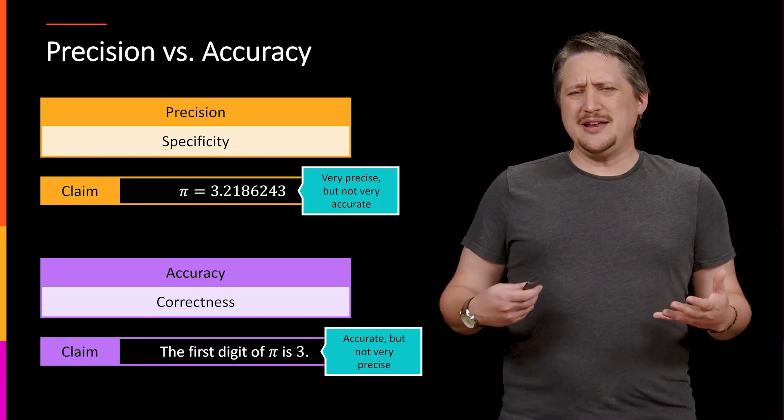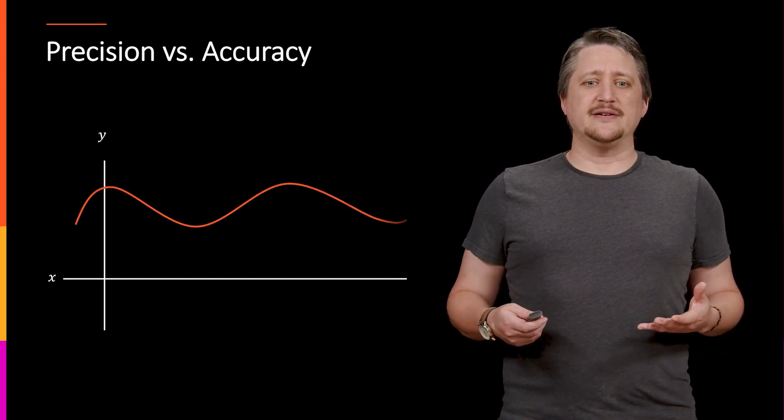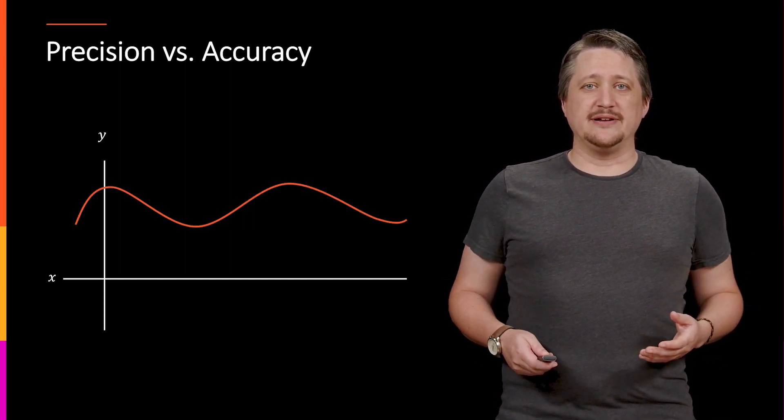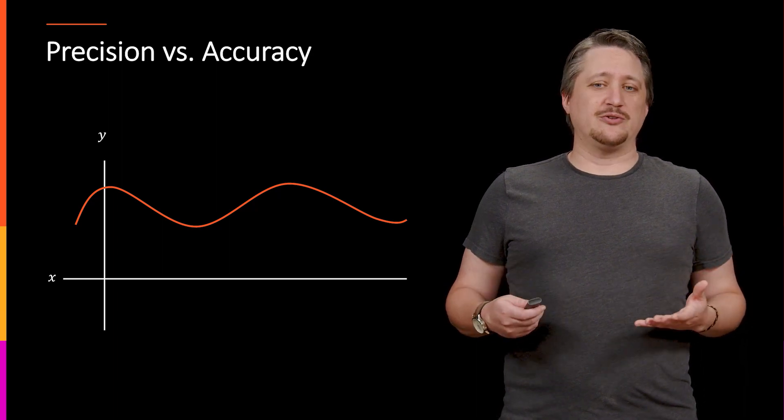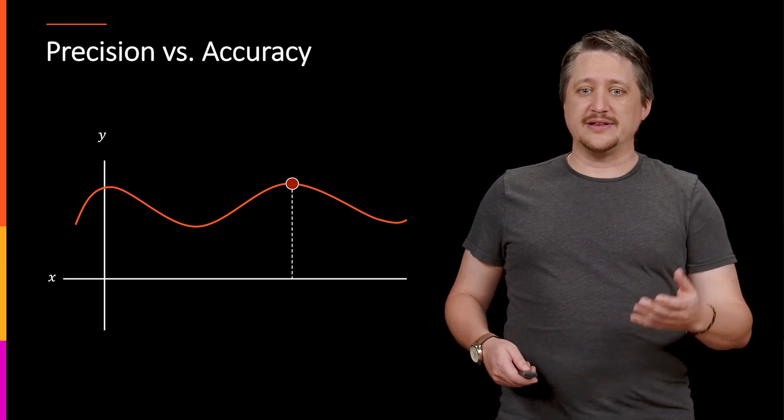So the main place that this comes into play is really when we're talking about things like graphing. We can have a curve here, and we can pick a general point, like maybe we're interested in local maximums or something, which would be a point like this.